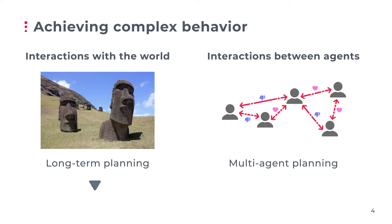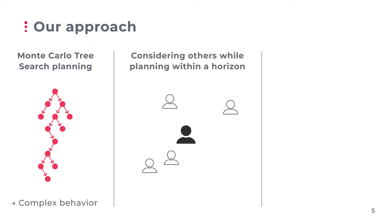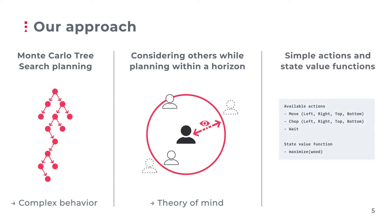However, both long-term planning and multi-agent planning harbor a central challenge: the combinatorial explosion of the planning space. Our approach is based on three pillars. First, we perform deep planning for each agent individually using Monte Carlo Tree Search, which is optimal for this application as it is efficient and supports multi-agent planning. Second, each agent considers others while planning, but for scalability, agents only consider other agents within a geometric or conceptual horizon, so the theory of mind emerges naturally from the system. Third, thanks to the first two pillars, we can define our agents with simple actions and state value functions, which greatly reduces the burden of authoring.